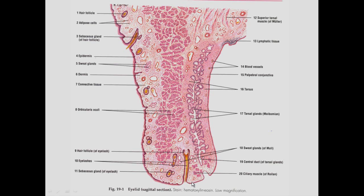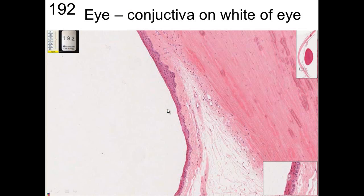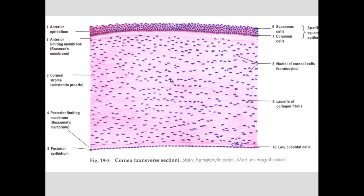On the outside, the tarsal glands make the eyelid slightly waxy to prevent tears from falling out, and there are eyelashes and skeletal muscle to move the eyes. On the white of the eye, the sclera runs all around. We also have the conjunctiva, which is the transition between stratified squamous epithelium and then simple columnar epithelium with goblet cells.